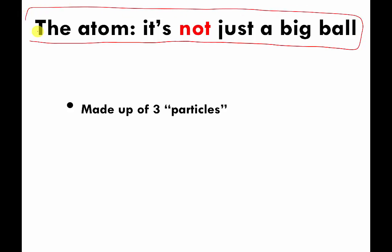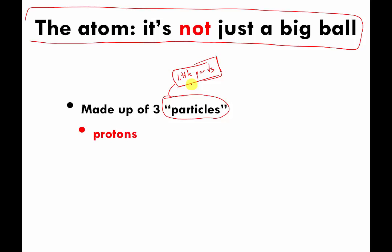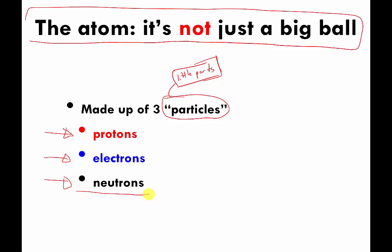The atom is made of three particles — particle is just a fancy word for little parts, but scientists prefer to use the word particles. The names of the three particles you're going to need to know: atoms are made of a particle called a proton, they're also made of particles called electrons, and the third particle is called a neutron. I'm going to describe these in detail one by one throughout the next collection of videos.